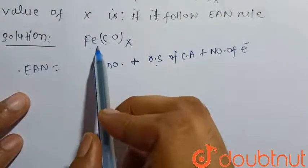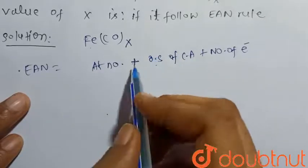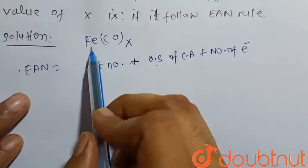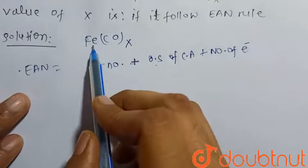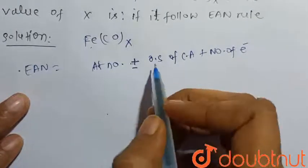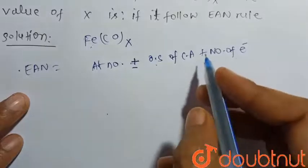That is, if the oxidation state of the central atom is negative, then it is added, and if the oxidation state of central atom is positive, then it is subtracted. So it may be plus minus oxidation state of the central atom.